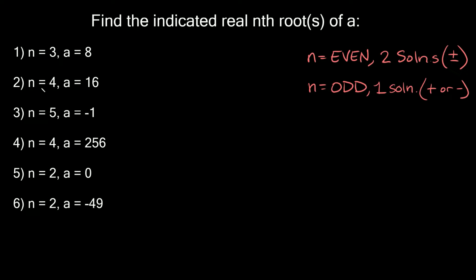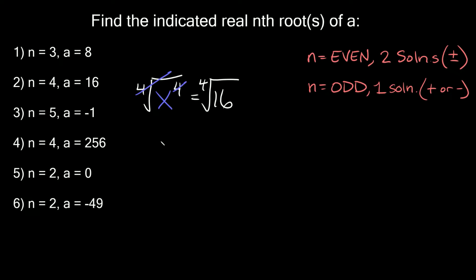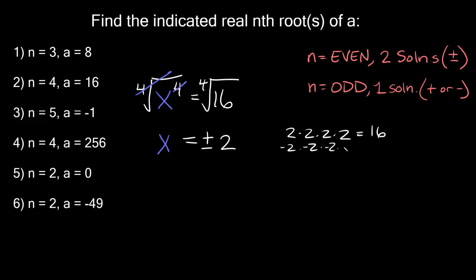Next, n is equal to 4 and a is equal to 16. So we have x raised to the fourth equal to 16. We have an even exponent, so we should expect two solutions — a positive and a negative one. We take the fourth root of both sides; those cancel out, leaving x equal to the fourth root of 16. What number times itself 4 times equals 16? That's positive and negative 2, because 2×2×2×2 = 16, and (-2)×(-2)×(-2)×(-2) = 16. So our two roots are positive 2 and negative 2.